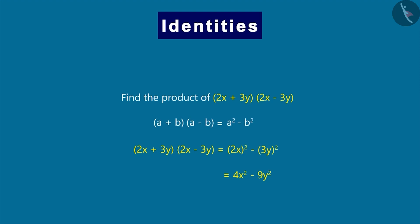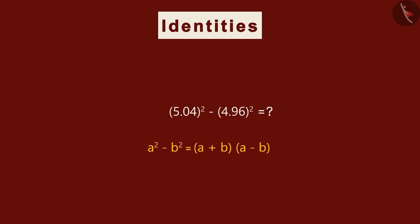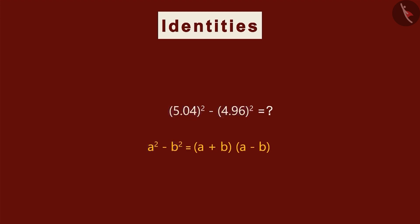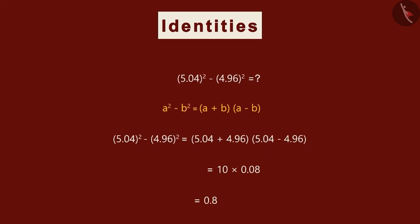Let us move on to the next example. Can you find the value of this? Can we use this identity here? We can see that this is in the form of a square minus b square. Here, a is 5.04 and b is 4.96. So this means this expression will be equal to this. On further simplification, we will get this. So this is another way of applying this identity.